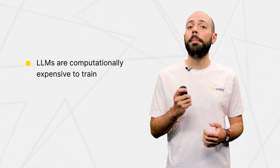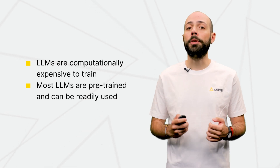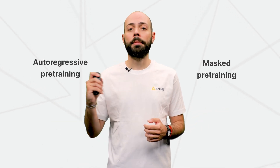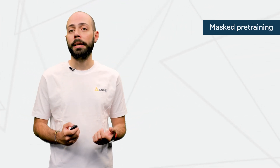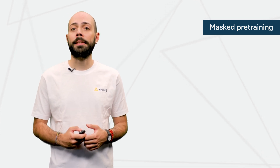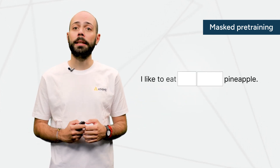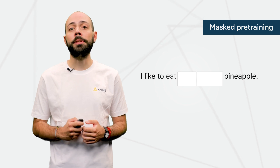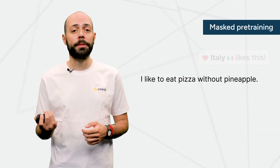This is why most LLMs currently available are pre-trained and can be readily used for inference. There are two general styles of such pre-training: masked and autoregressive. In masked pre-training, such as for BERT, the model is input a segment of text like this one and has to predict the masked tokens based on the surrounding context — for example, 'pizza' and 'without'.